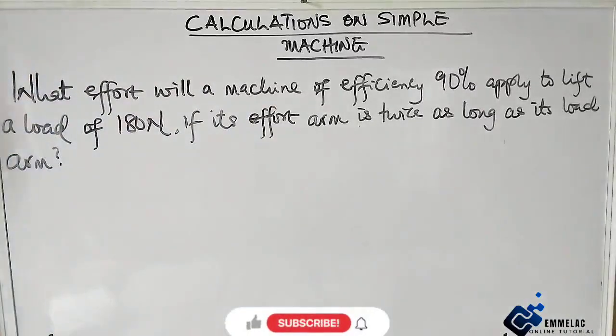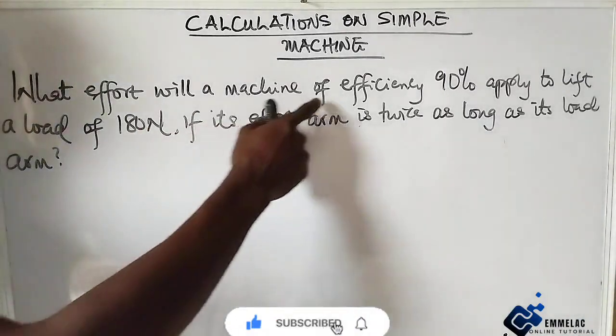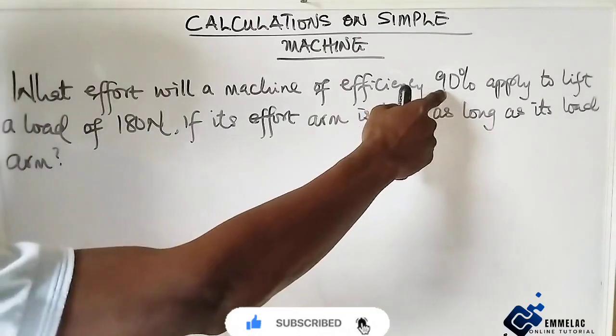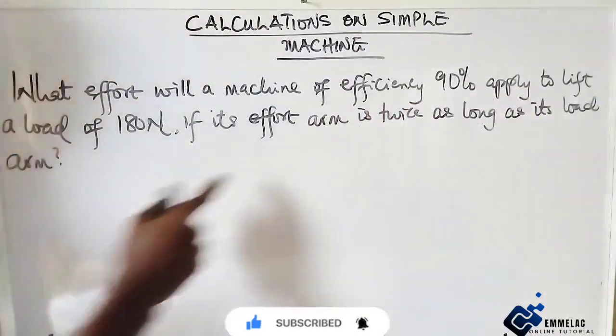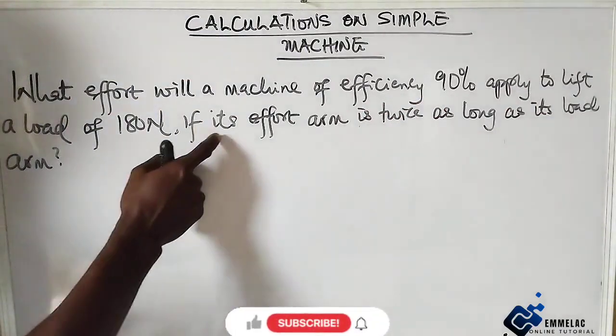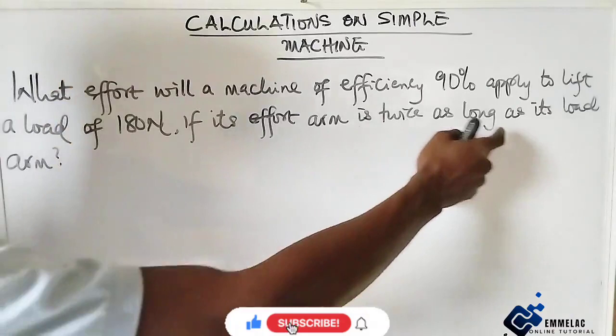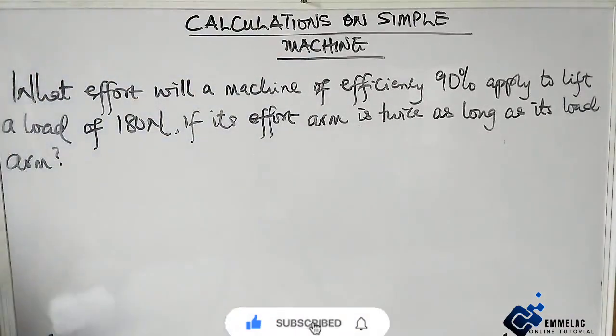Welcome to Emilac Online Tutorial. Before us is this question of simple machines that says: What effort will a machine of efficiency 90% apply to lift a load of 180 newtons if each effort arm is twice as long as each load arm? Now let's start.